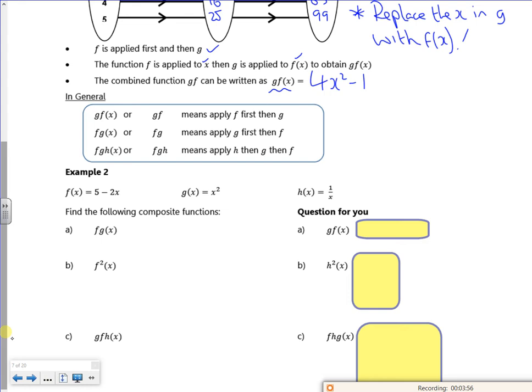So g of f means I do f first, so I stick f into g. f of g means I do g first, and I stick g into f. f of g of h means I do h first, stick it in g, then stick that answer into f. That's the idea behind it.